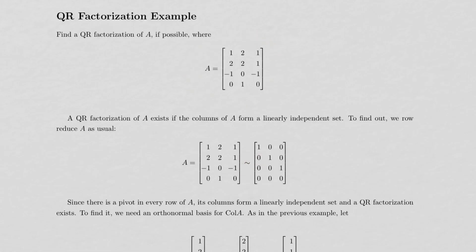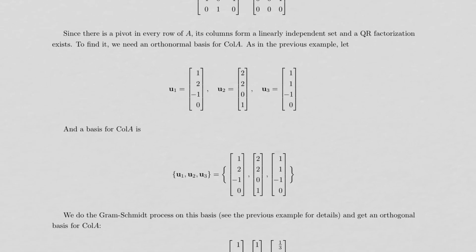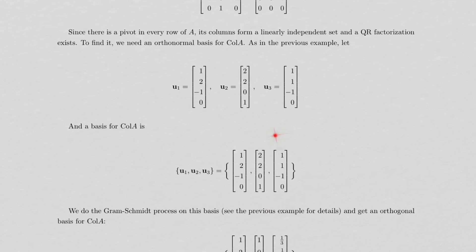If I row reduce it, of course I get a pivot in every column. These are all pivot columns, and a basis for the column space is the same as the same column space as the other matrix, even though it's not the same matrix. And so to do the QR factorization,